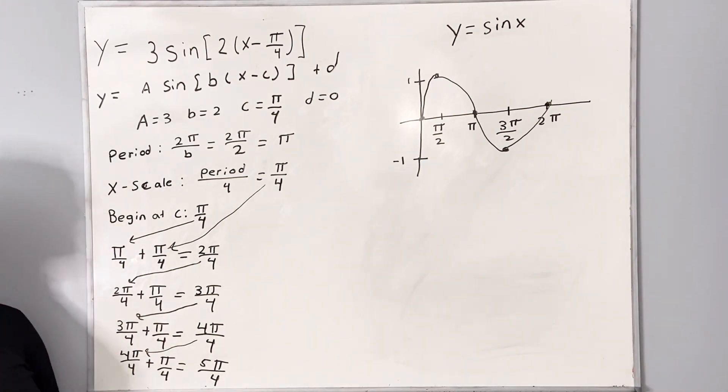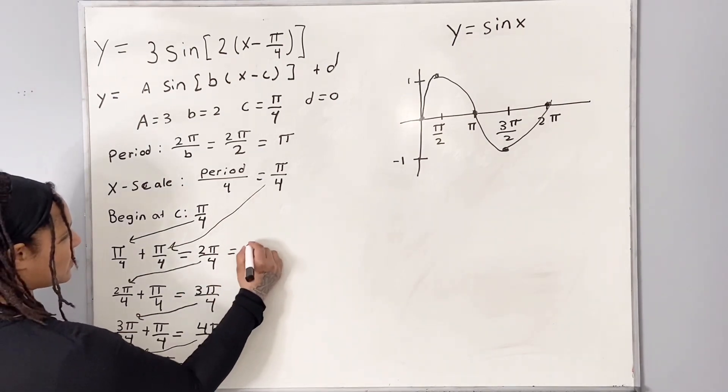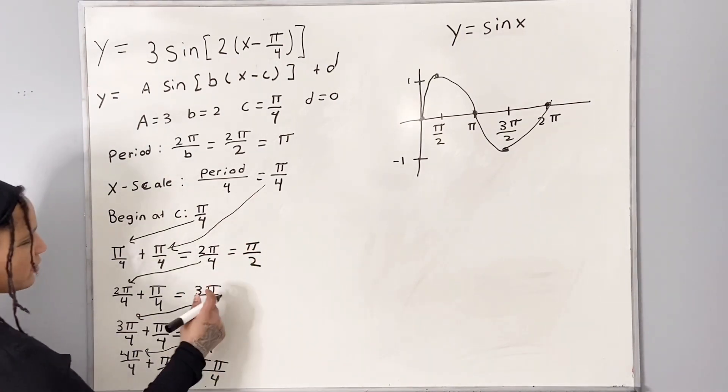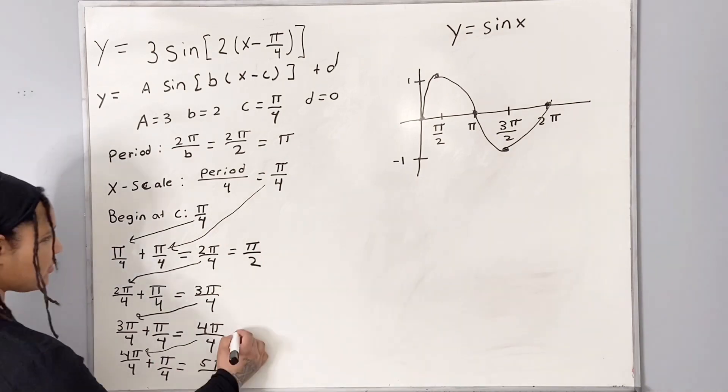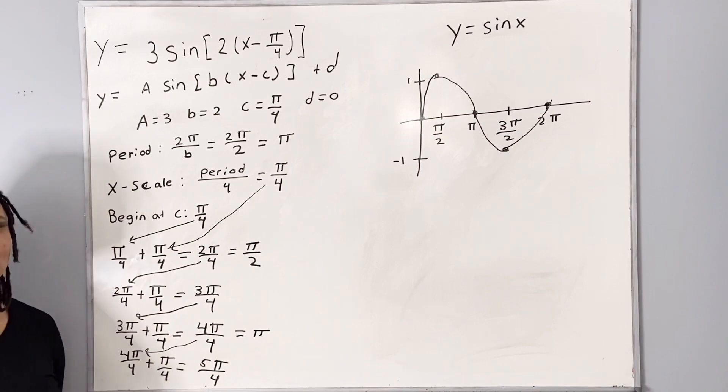And now I'll just go ahead and reduce my fractions. 2 pi over 4 reduces to pi over 2. 3 pi over 4 does not reduce any further. 4 pi over 4 reduces to pi, and 5 pi over 4 does not reduce any further.